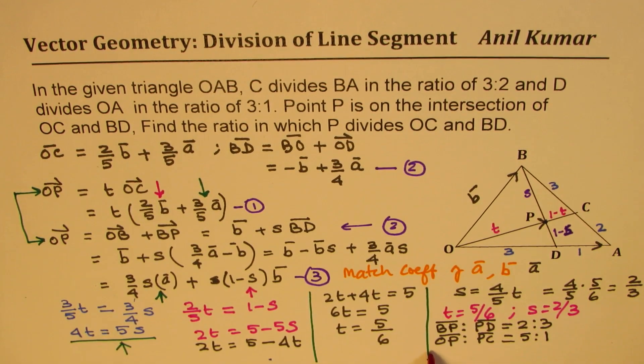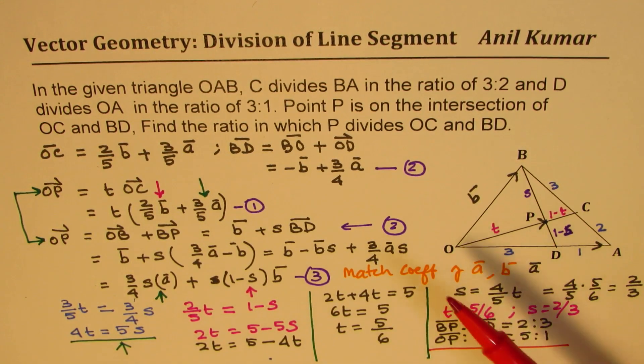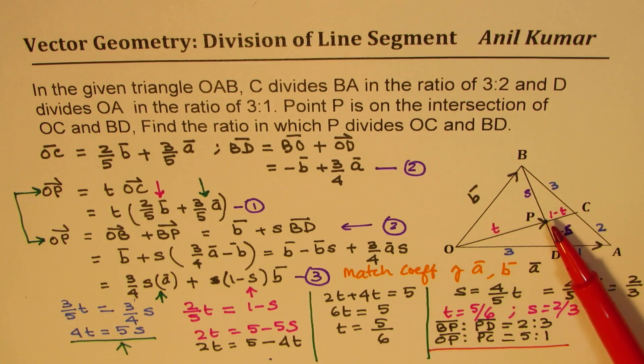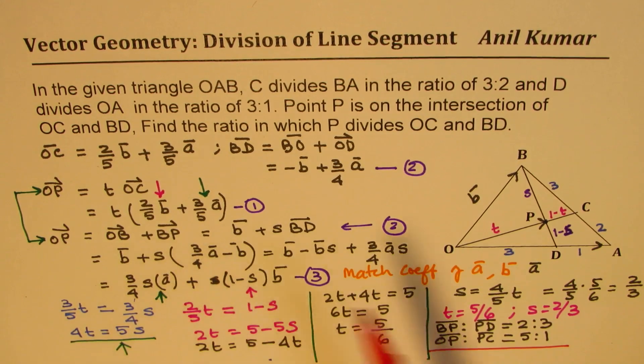So I hope you understand this strategy. The strategy in solving these questions is that you have to take the point under consideration, find its value from two different directions, so that you involve both the parameters, and then equate the terms which are similar, and get your answer. So I hope that helps. Feel free to write a comment, share your views, and if you like and subscribe to my videos, that would be great. Thanks for watching and all the best.